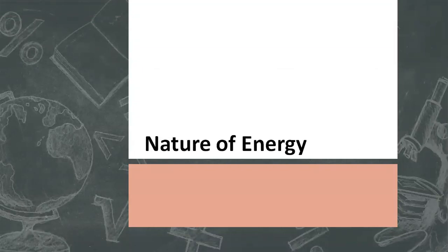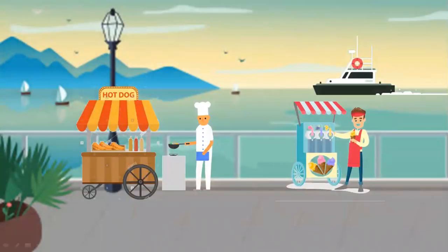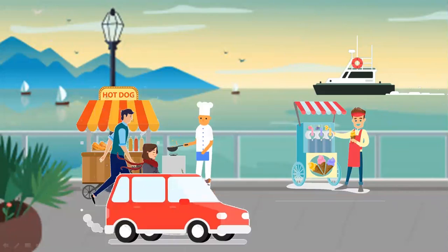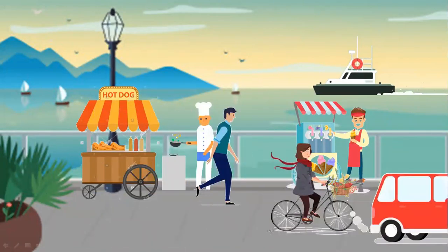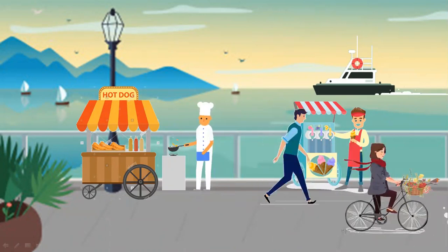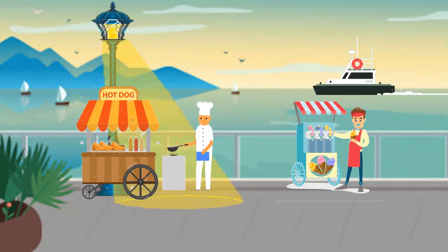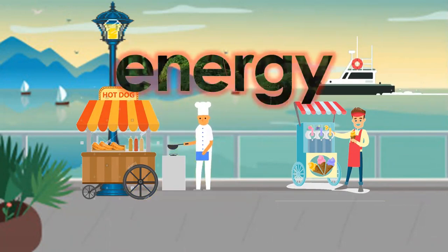Nature of energy. Modern civilization is possible because people have learned how to change energy from one form to another and then use it to do work. People use energy to walk and ride bicycle, to move cars along roads and boats through water, to cook food on stoves, to make ice cream in freezers, to light our homes and offices, to manufacture products, and to send astronauts into space.